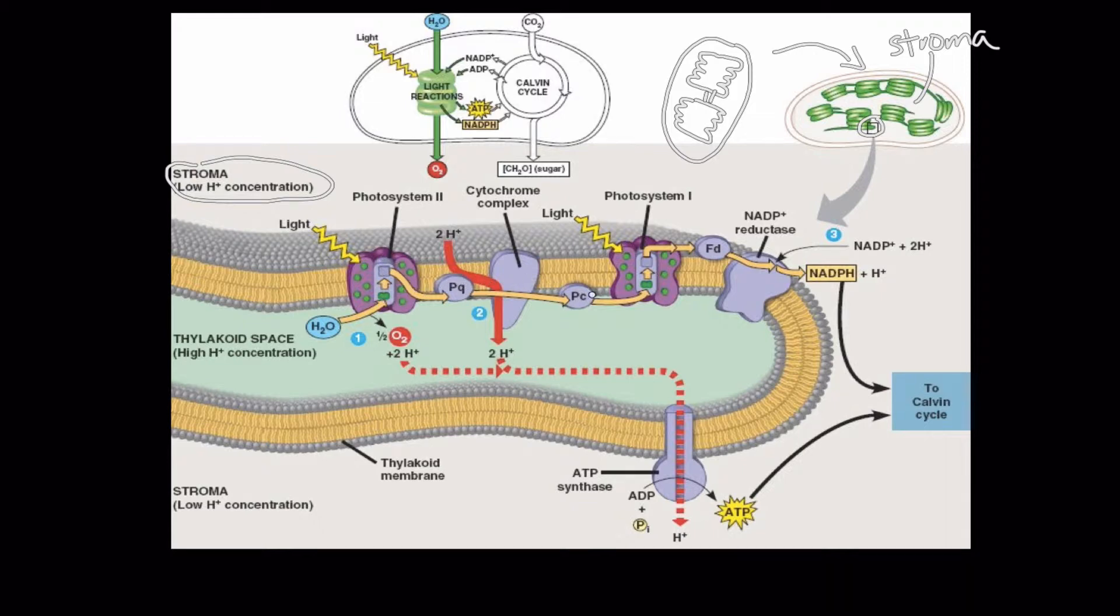And as they move through photosystem 2, hydrogen ions are being pumped from the stroma into the thylakoid space, so here are the hydrogen ions being pumped inward. So the inside of the thylakoid is becoming concentrated with hydrogen ions.